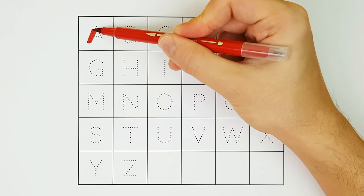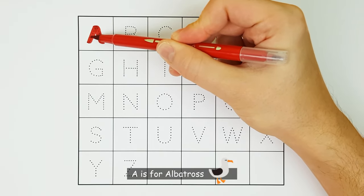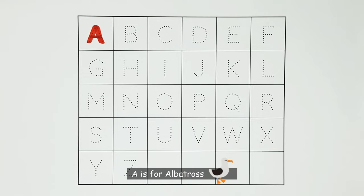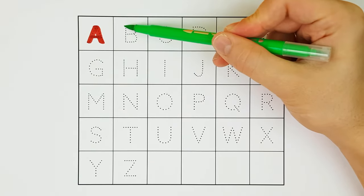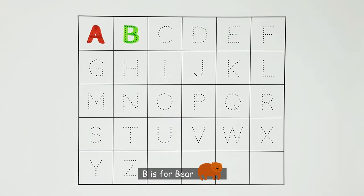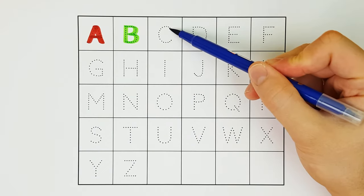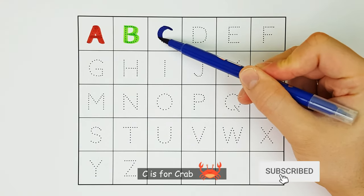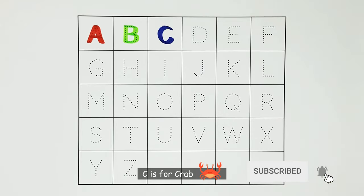A. A is for Albatross. A. B. B is for Bear. B. C. C is for Crab. C.